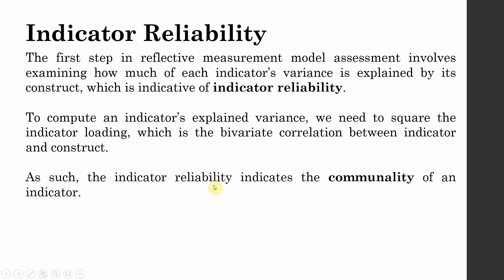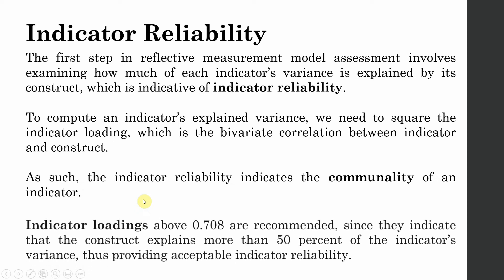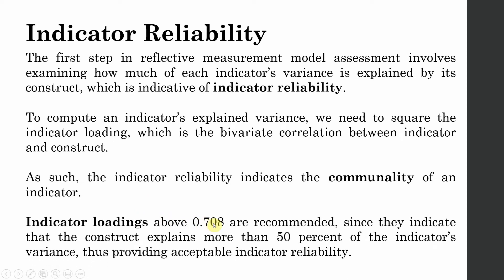The indicator reliability indicates the commonality of the indicator. Indicator loadings above 0.708 are recommended, since they indicate that the construct explains more than 50% of the indicator's variance, providing an acceptable indicator reliability.